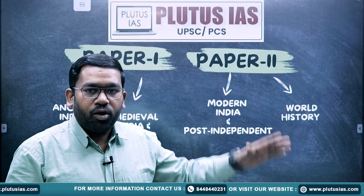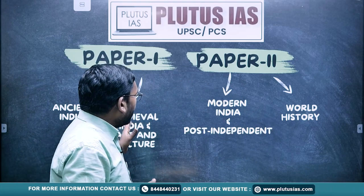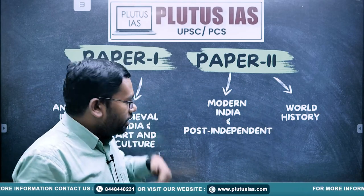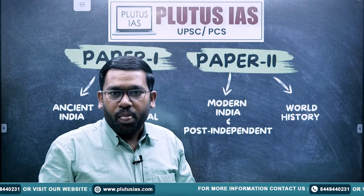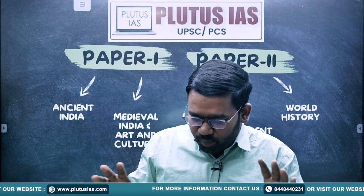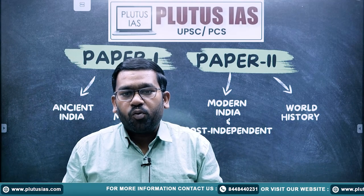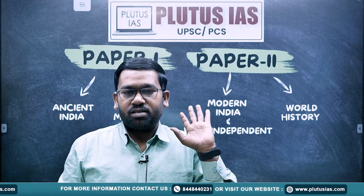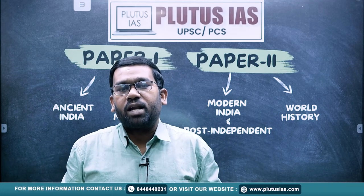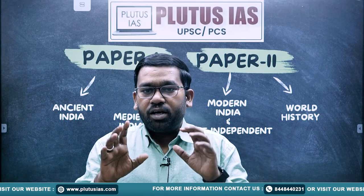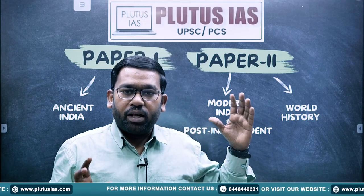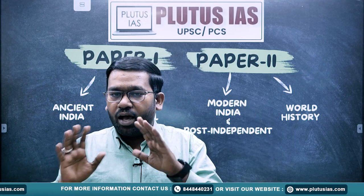Paper 1 covers Ancient plus Medieval India including Art and Culture, and Paper 2 covers Modern India, Post-Independence, and World History. In these two papers, we are going to take about 180 hours of classes. In these 180 hours, we will have five classes per day, so in the next 90 days we are going to complete our History Optional syllabus including Ancient, Medieval, Modern, and World History.